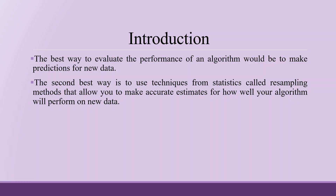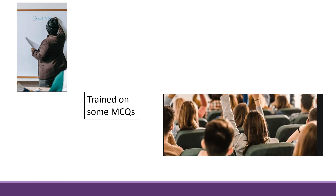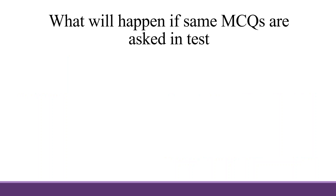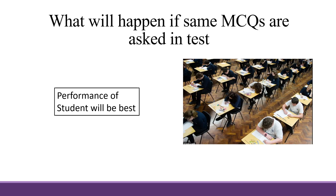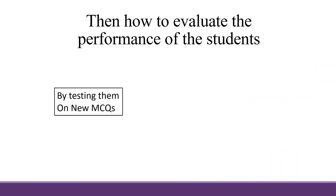The best way to evaluate the performance of an algorithm would be to make predictions for new data. The second best way is to use resampling methods from statistics that allow you to make accurate estimates for how well your algorithm will perform on a new dataset. For example, a teacher trains students on some MCQs — if the same MCQs appear in the exam, performance will be best. Another method is testing them on new MCQs.